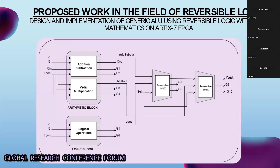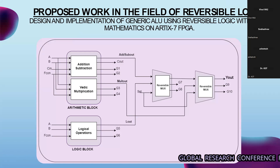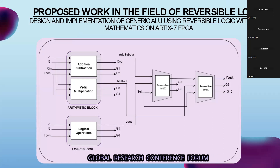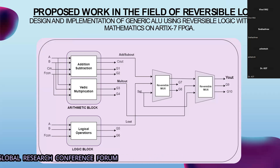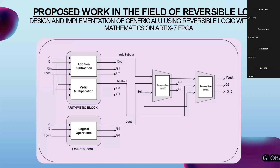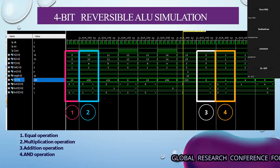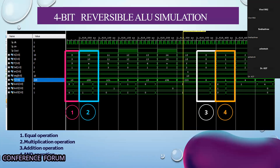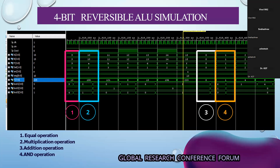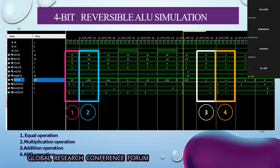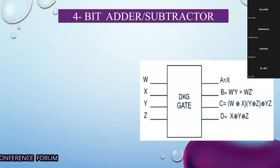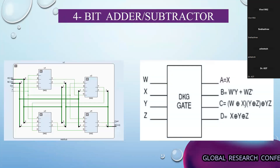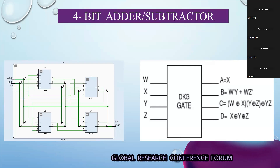For this design, we are using Xilinx Vivado software, and the implementation is done on the FPGA board, that is the Artix-7 Basys 3. The next slide shows the simulation that we have done using the Vivado software of the ALU. These are the various operations that the ALU has performed — the first shows the equal operation, then the multiplication, addition, and the AND operation.